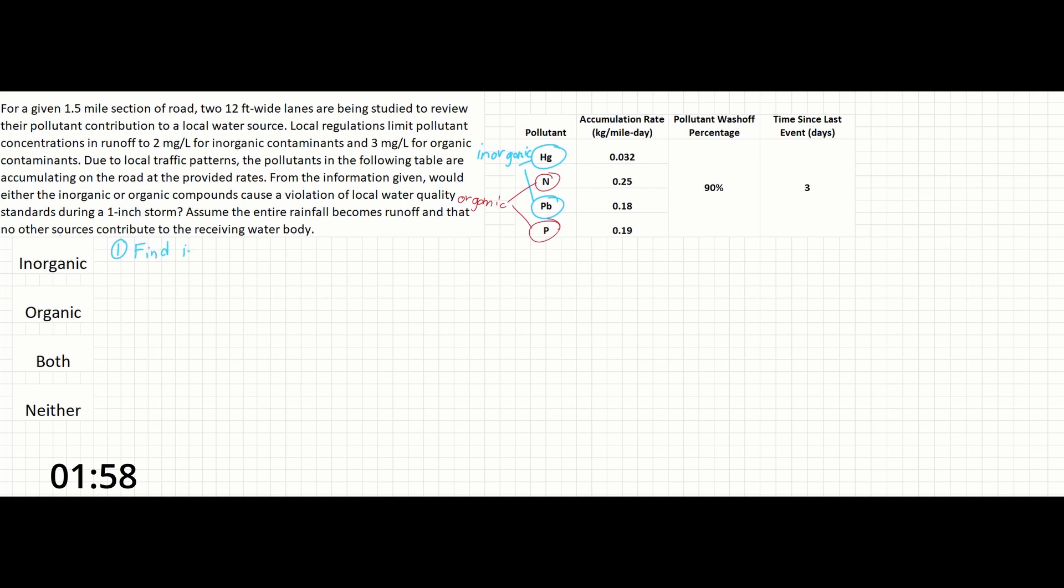Step one is going to be find the inorganic wash-off pollutant mass. So first we will sum up our inorganic contaminants. Mercury is going to be 0.032 and lead is going to be 0.18.